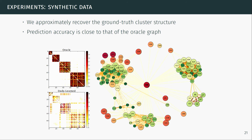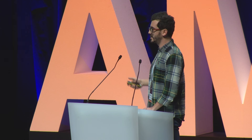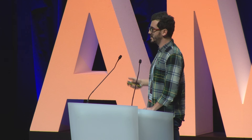I'll show numerical experiments. On synthetic data, we showcase the topology we can recover automatically without knowing the underlying task structure. We created data where user tasks are organized in clusters — users within a cluster have somewhat similar tasks. Running our algorithm on small training samples per device, without knowing this structure, we can approximately recover four clusters. Training personalized models over this learned graph gives prediction accuracy very close to using the oracle graph that we don't know in practice.